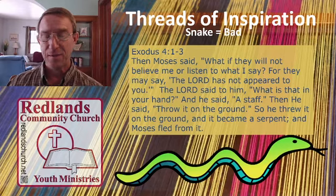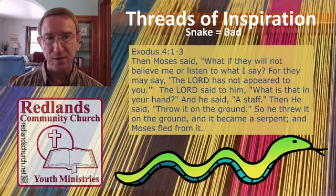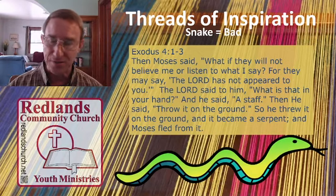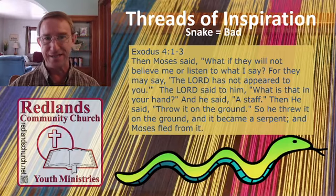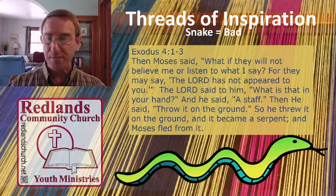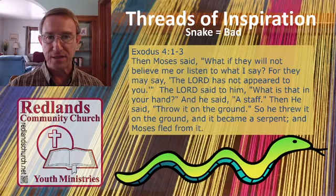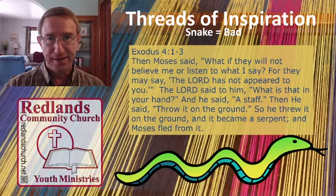Think about that — if you're going to grab a snake, you grab it right behind the head so it can't turn around and bite you. So Moses, in faith, has to reach down and grab that snake's tail. And of course, it turns back into a staff. But anywhere you look in Scripture, in many many passages — and we just don't have time to go over all of them today — you're going to see that snake equals bad.